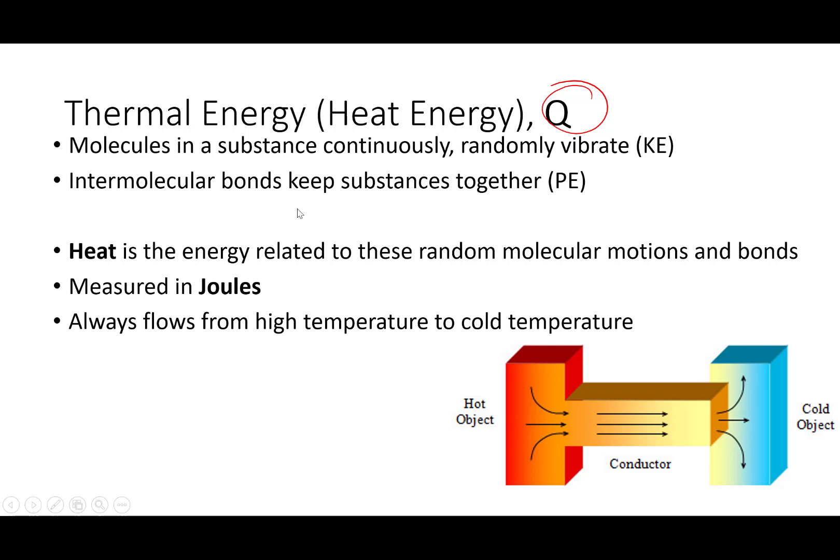Those molecules also have intermolecular bonds that hold the substances together, or at least try to. And since there's that force between the molecules, the molecules also have potential energy between themselves, just like all of the planets in the solar system have gravitational potential energy with each other. And heat, or thermal energy, is the energy related to this random molecular motion and these intermolecular bonds, the kinetic and potential energies of the individual molecules in a substance.